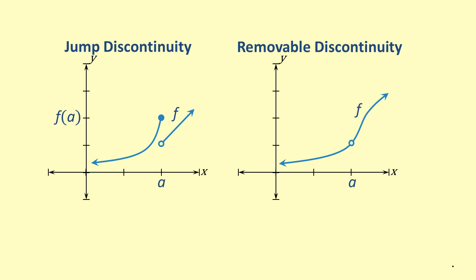In other words, a function f has a jump discontinuity at a if the limit of f(x) as x approaches a from the left is not equal to the limit of f(x) as x approaches a from the right.